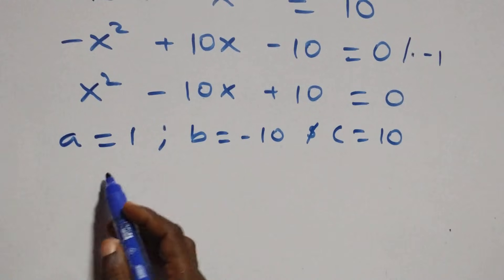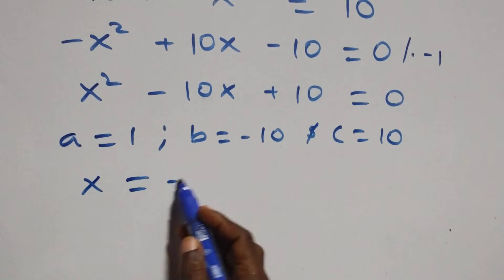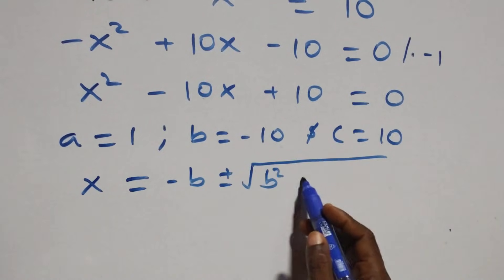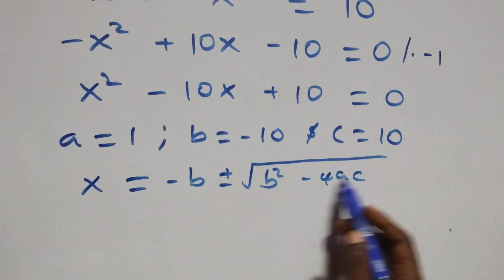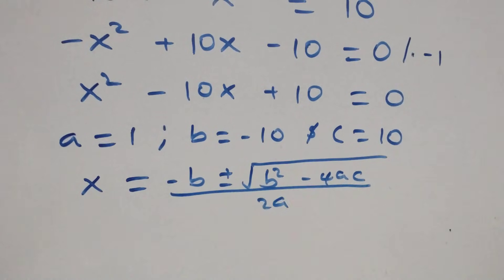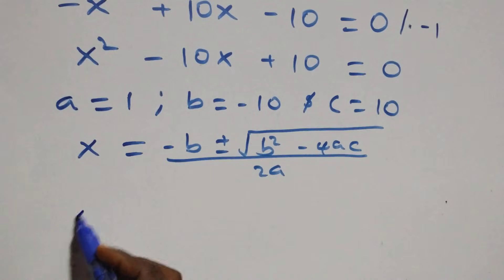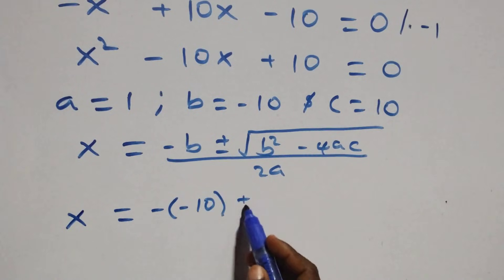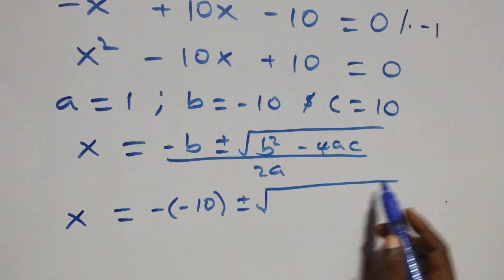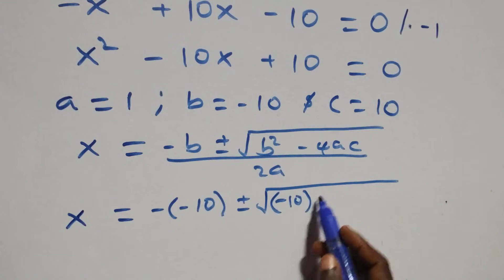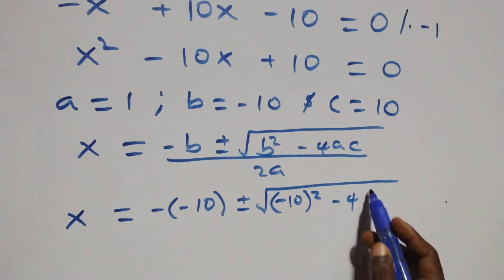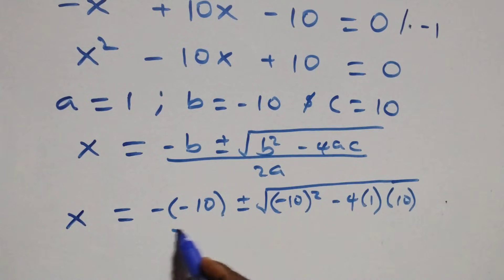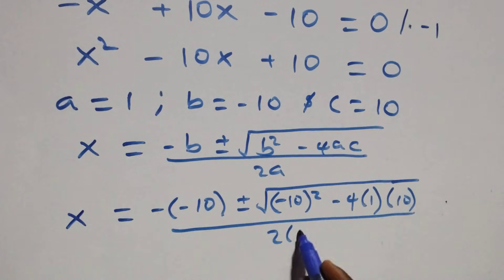We apply the quadratic formula: x equals to minus b plus or minus square root of b squared minus 4ac, all over 2a. Substituting, we have x equals to minus(minus 10) plus or minus square root of (minus 10) squared minus 4 times 1 times 10, all over 2 times 1.